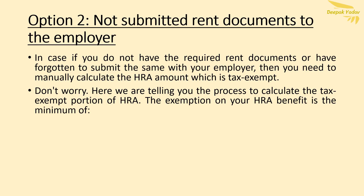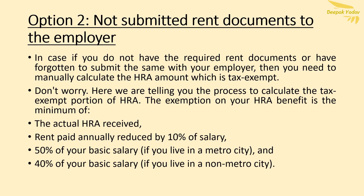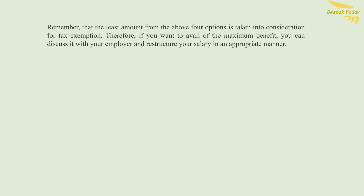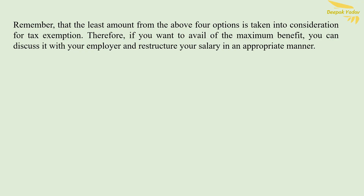The exemption on your HRA benefit is the minimum of: Number 1 — the actual HRA received; Number 2 — rent paid annually reduced by 10% of salary; Number 3 — 50% of your basic salary if you live in a metro city; and Number 4 — 40% of your basic salary if you live in a non-metro city. The least amount from the above four options is taken into consideration for tax exemption.